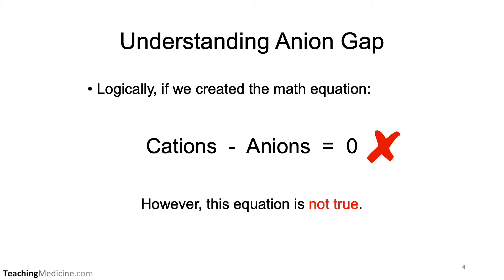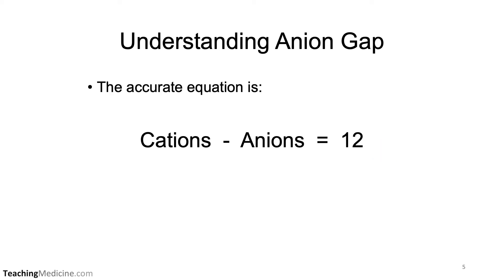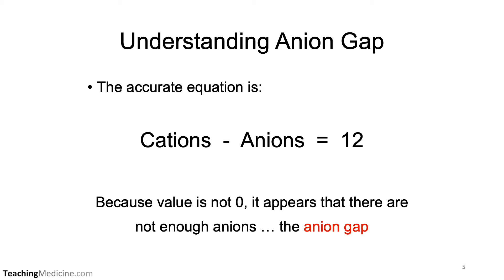However, this equation is not actually true. In fact, when we calculate the number of cations minus the number of anions, the value is around 12. Because the value is not zero, it appears that we don't have enough anions to make us electrically neutral. And that's why this is called the anion gap.